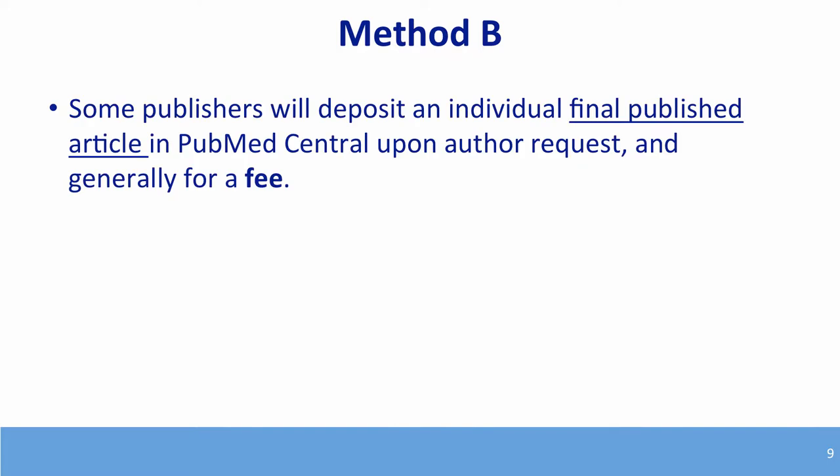Method B is something authors and principal investigators should be careful about. This is a publisher that will deposit the final published article in PubMed Central if the author requests it — but this is not free in most cases. Publishers charge a fairly hefty fee, sometimes $3,000 or more added onto the publication fee, and the cost isn't always clearly indicated on the copyright form.